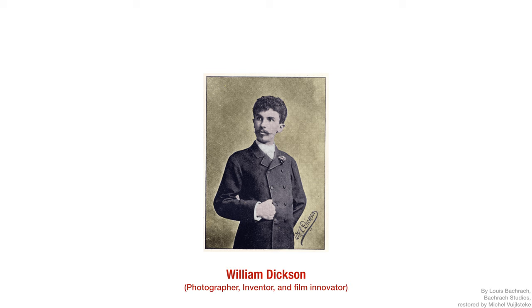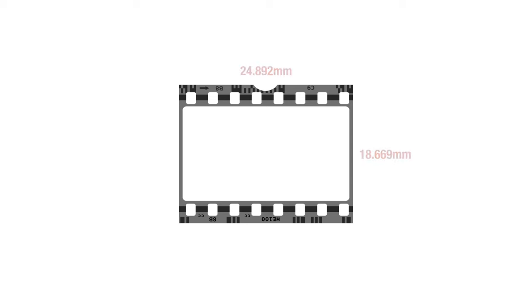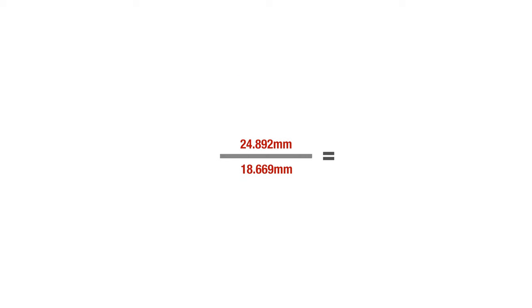Where did aspect ratio come from? To make a long story short, the very first aspect ratio was introduced by a man known as William Dixon who was a photographer. William worked for a man called Thomas Edison who wanted to experiment with one of the first mass-produced Kodak film types in the form of flexible 35mm film in the 1890s. The resulting picture was 24.892mm by 18.669mm, which gives us an aspect ratio of 1.33 — effectively the birth of the 4 by 3 aspect ratio.